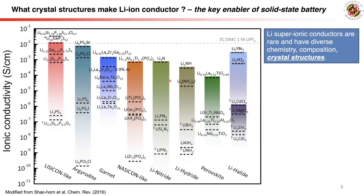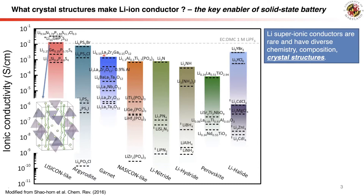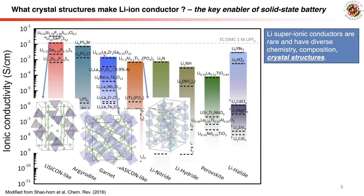Compared to the liquid electrolyte, a very limited number of solid ion conductors can exhibit similar levels of ionic conductivity at room temperature. A few of the most well-known examples of superionic conductors include LGPS, Garnet, and NASICON. They have very different chemical compositions and crystal structures.